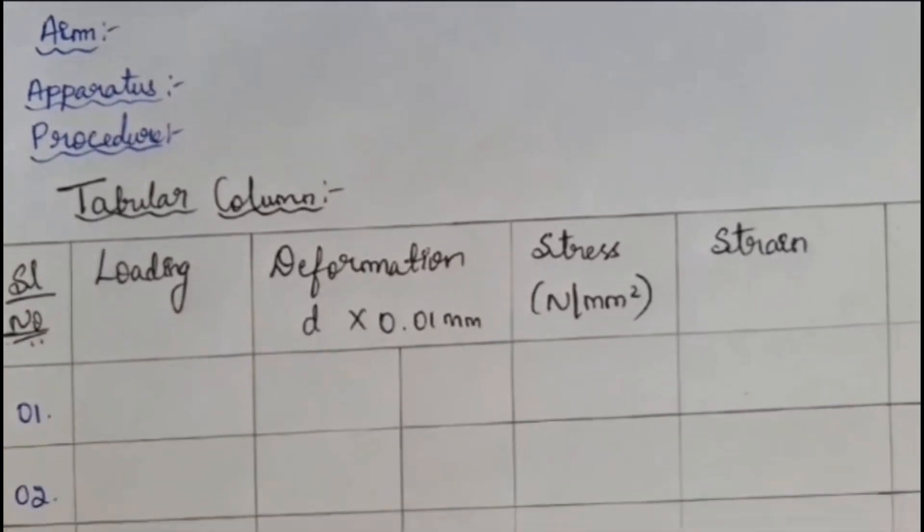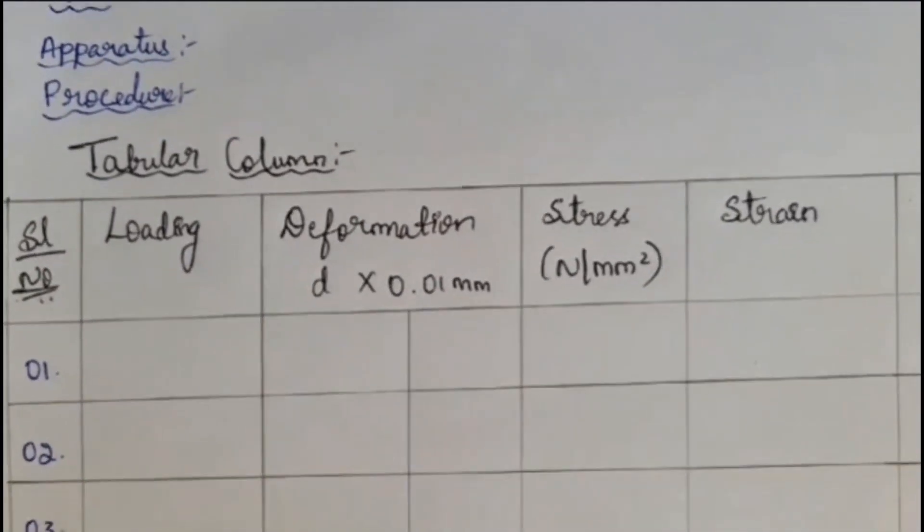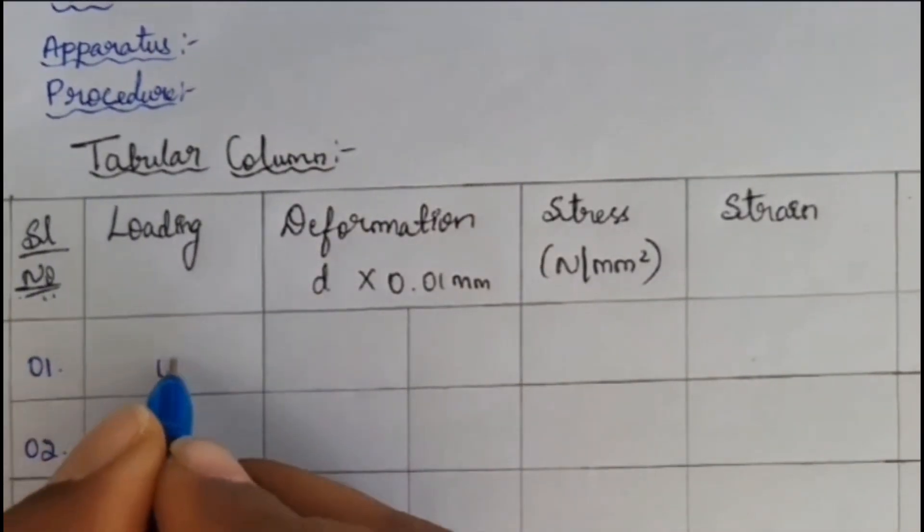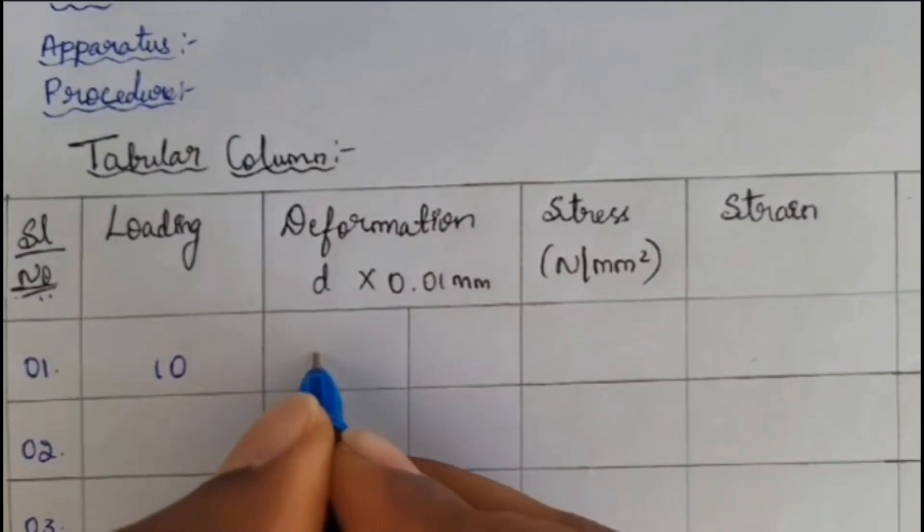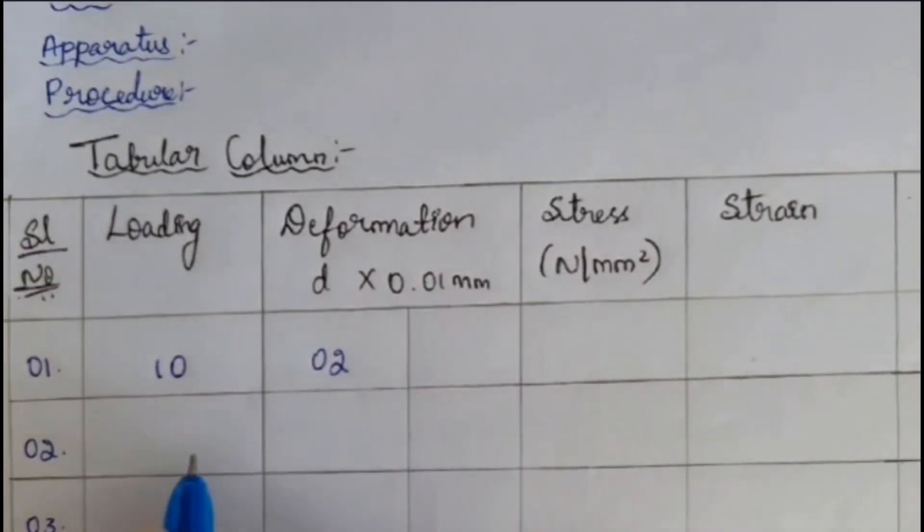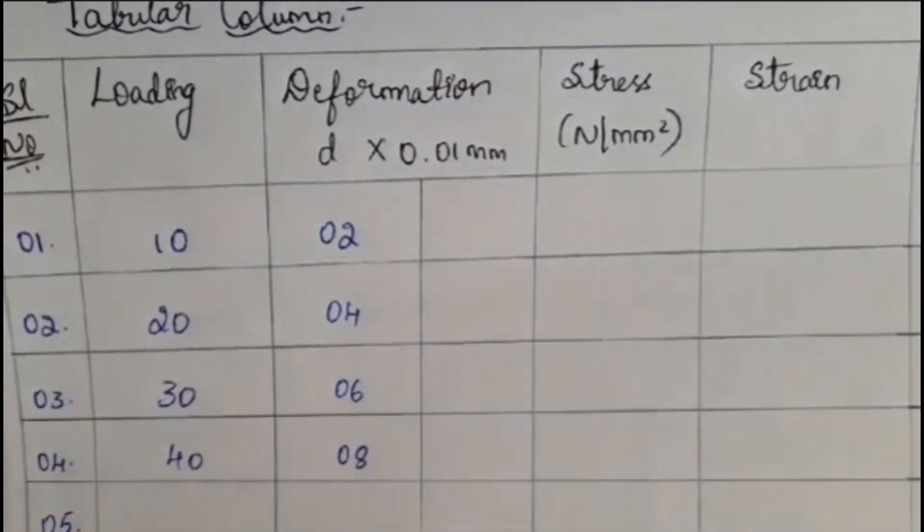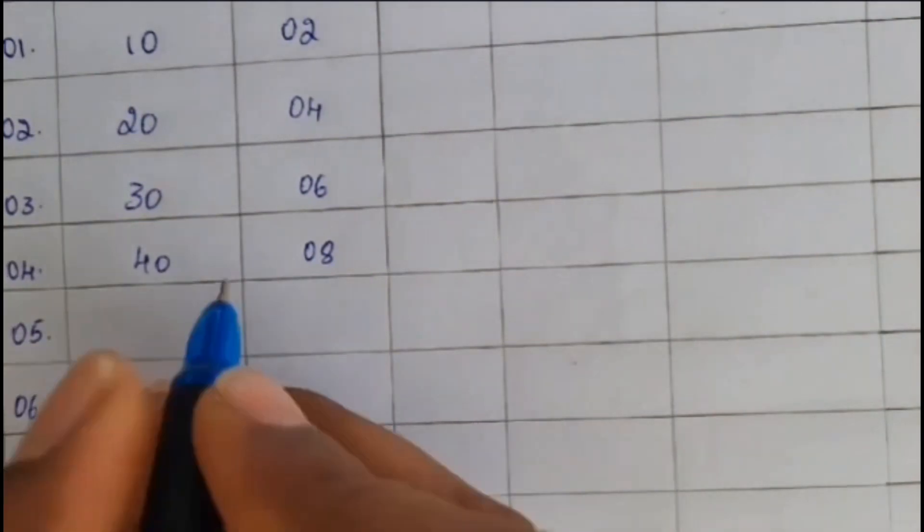In the experiment, you have to take the readings. You can take up to 5 readings or 10 readings. That will mainly depend upon your examiner, external examiner. So, suppose if I take an example of, if I am taking loading of 10 kN, I will be getting the deformation as 2. For 20 kN, I will be getting deformation as 4. For 30 kN, 6. For 40 kN, I will be getting 8. So, like that, for example, it will be continuing. For 50 kN, I will be getting 11.